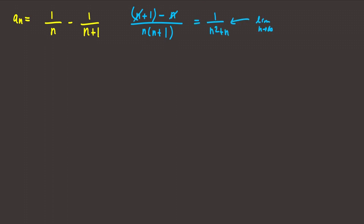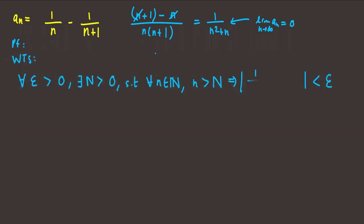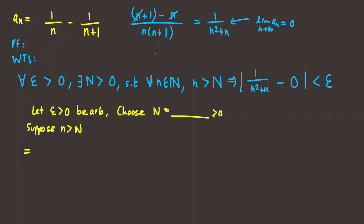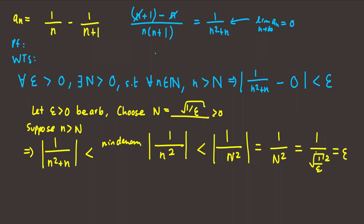For this rational function, doing common denominators gives a quadratic on the bottom, so the limit equals 0 — a standard function dealt with earlier. We let epsilon be arbitrary, pick N, suppose the antecedent, take the right-hand side, minimize the denominator by taking out the positive n, and let N = √(1/ε).